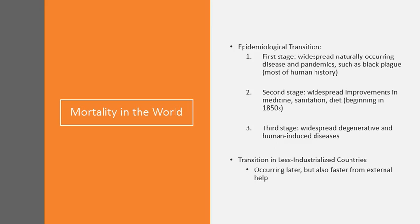In the third stage, the leading causes of death become widespread degenerative or human-induced diseases. In some respects, only those countries where people live long enough to develop such problems as heart disease and cancers will they become the leading causes of death. If people are dying in their 40s and 50s, they're not living long enough to develop those degenerative diseases. Of course, reaching the third stage is going to coincide with an expanding life expectancy.